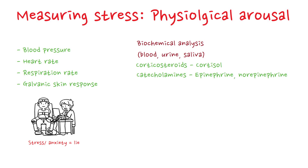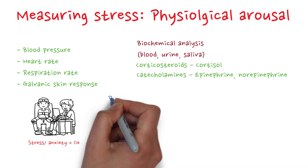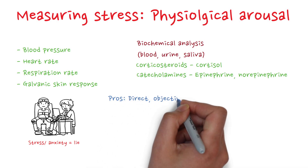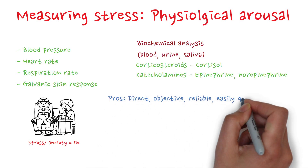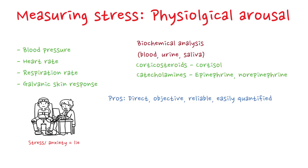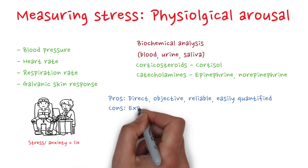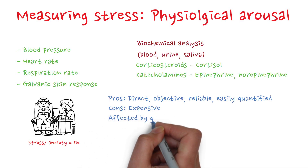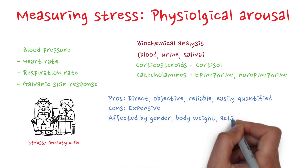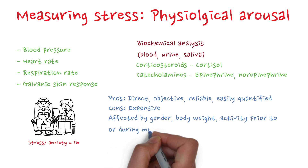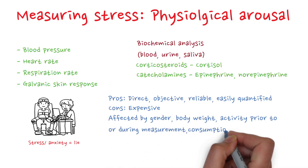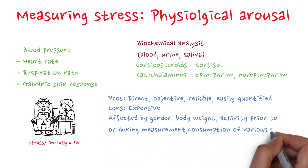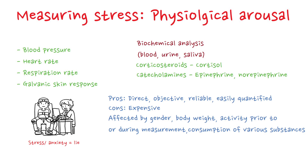Now let's talk about pros and cons. The advantage of using physiological arousal to measure stress is that physiological measures are reasonably direct, objective, reliable, and can be easily quantified. On the other hand, it can be expensive, and physiological arousal is affected by a person's gender, body weight, activity prior to or during measurement, and consumption of various substances — for example, drinking coffee.